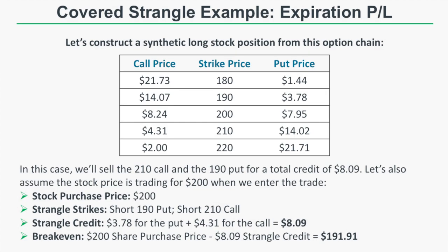Let's look at a covered strangle example trade. Assume the stock is trading at $200. We buy 100 shares at $200 per share, then sell the 210 call and the 190 put for a total strangle credit of $8.09 — $3.78 for the put and $4.31 for the call. This brings our break-even price to $191.91, since $200 minus $8.09 equals $191.91.